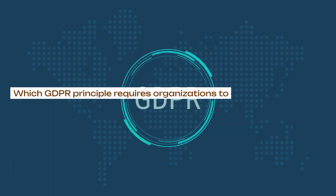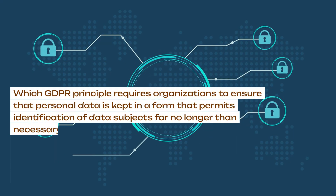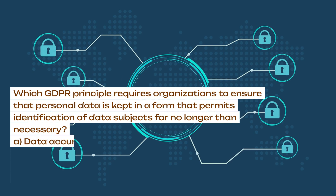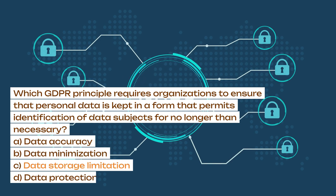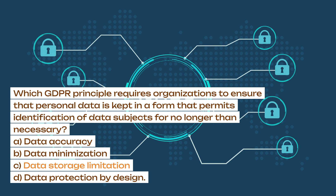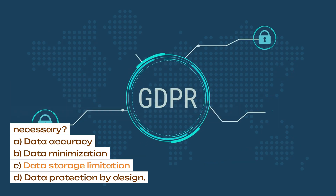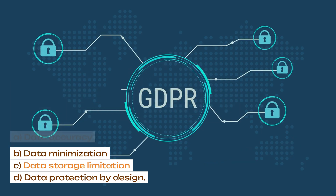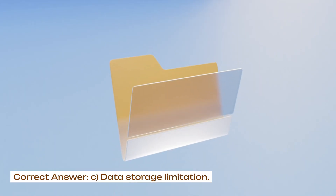Which GDPR principle requires organizations to ensure that personal data is kept in a form that permits identification of data subjects for no longer than necessary? A. Data accuracy. B. Data minimization. C. Data storage limitation. D. Data protection by design. Correct answer: C. Data storage limitation.